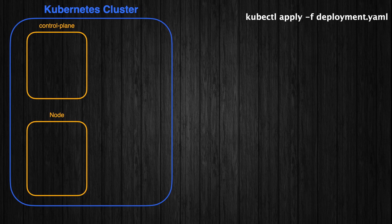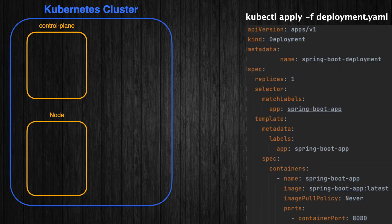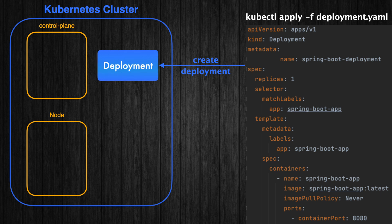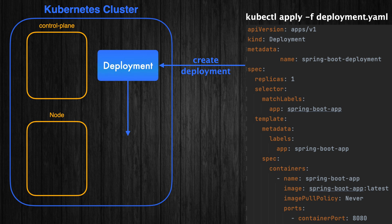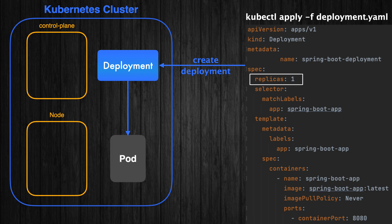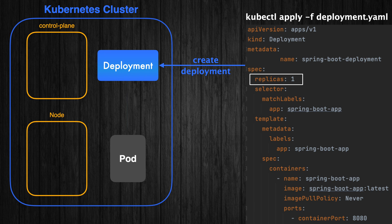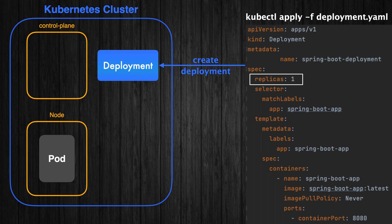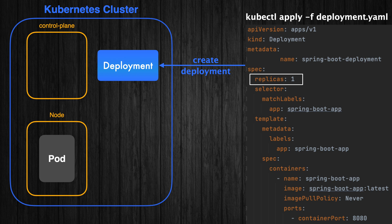The command kubectl apply -f deployment.yaml creates a deployment in the existing Kubernetes cluster. The deployment instructs Kubernetes to create the specified number of pods based on the replicas field in the deployment YAML. At this point, Kubernetes schedules the pods to run on the available node that Minikube created when it started the cluster.